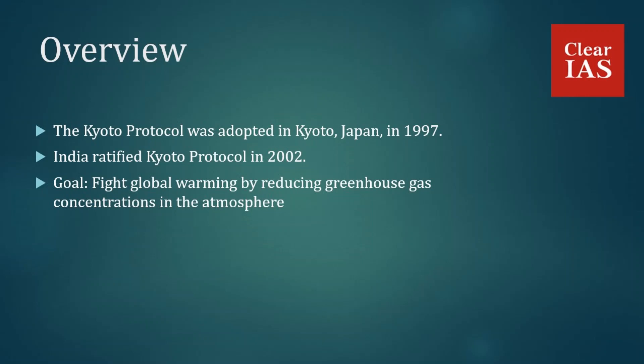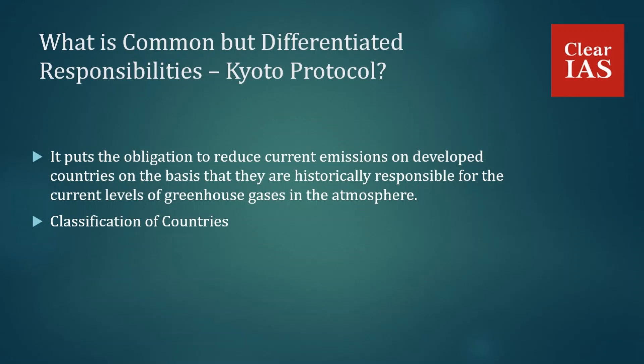Common but differentiated responsibilities (CBDR) puts the obligation to reduce current emissions on developed countries, on the basis that they are historically responsible for the current levels of greenhouse gases in the atmosphere. CBDR divides countries into two categories: historically biggest polluting developed countries like the US, UK, France, Japan, and Russia — polluting since the Industrial Revolution — and recently polluting developing countries like China, India, and Brazil, which have been polluting since the 1950s.